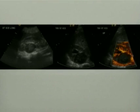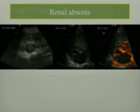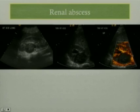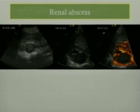Another right upper quadrant pain cause is that of a renal abscess or pyelonephritis. Pyelonephritis usually can be a difficult diagnosis on ultrasound; however, when it forms a renal abscess, it is usually better seen on ultrasound — as seen in this ultrasound image as a focal hypoechoic area within the renal parenchyma with increased peripheral vascularity.